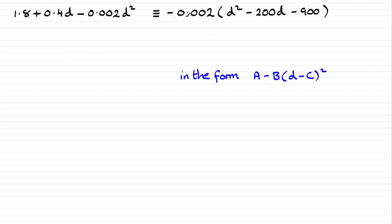Now we've got the d-squared minus 200d minus 900 in the bracket here, which is in the right form for completing the square.